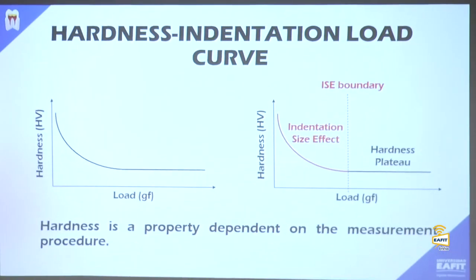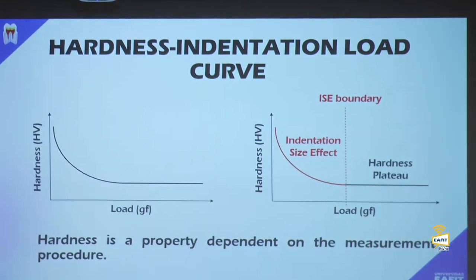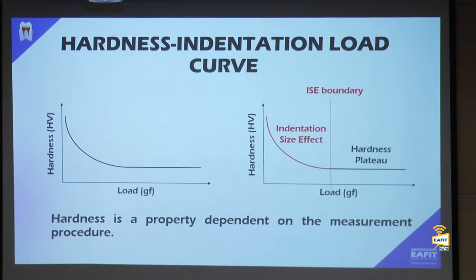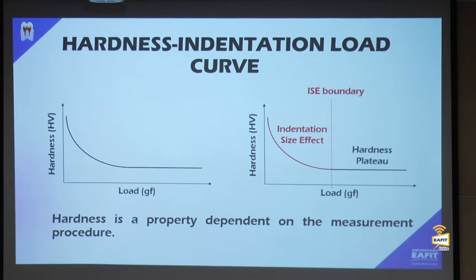To compare hardness values between materials, you must use the same load, same tip, and same dwell time — otherwise values are not comparable. The standard requires a full characterization across a range of loads: starting from small loads up to the maximum. For micro indentation, the maximum load is one kilogram and the minimum is 10 grams.